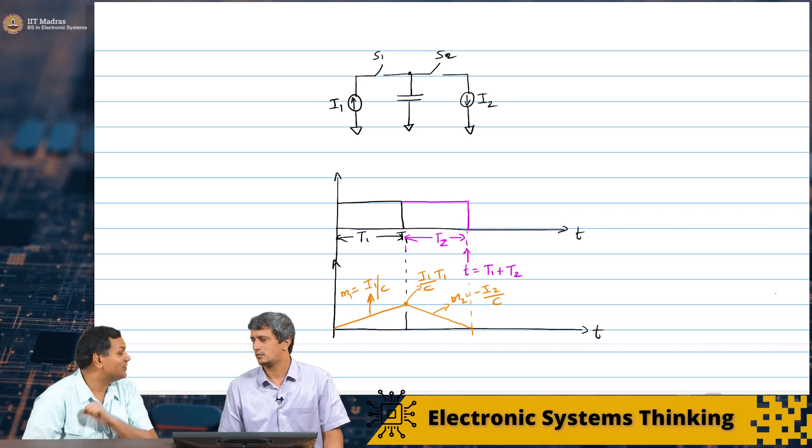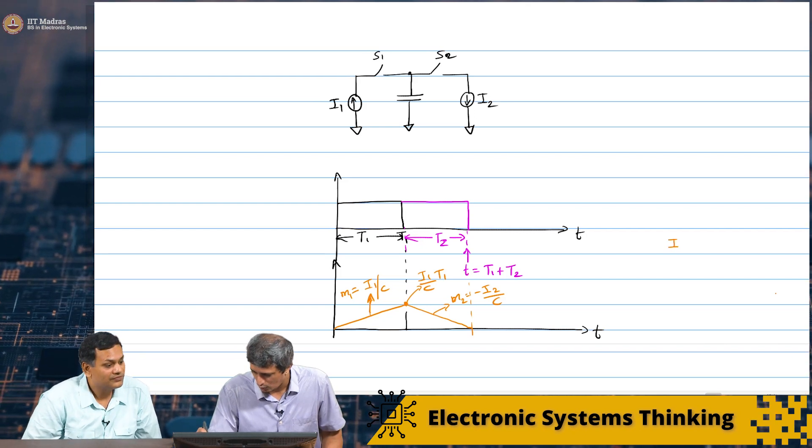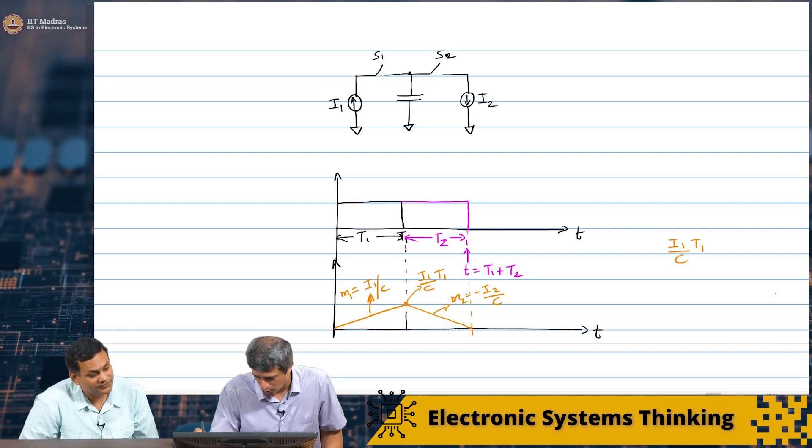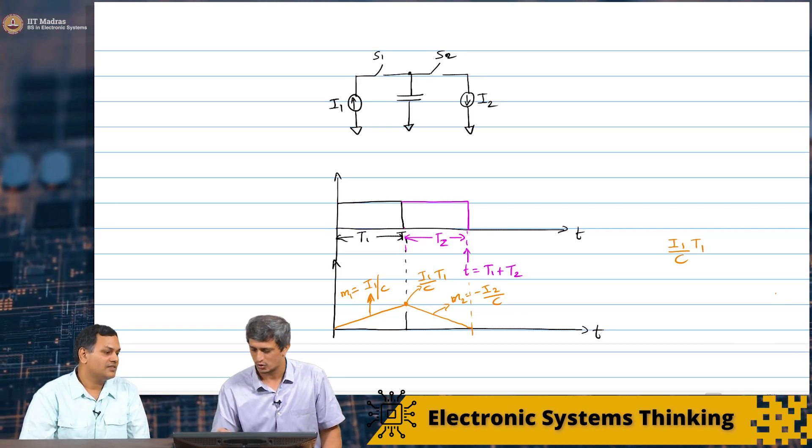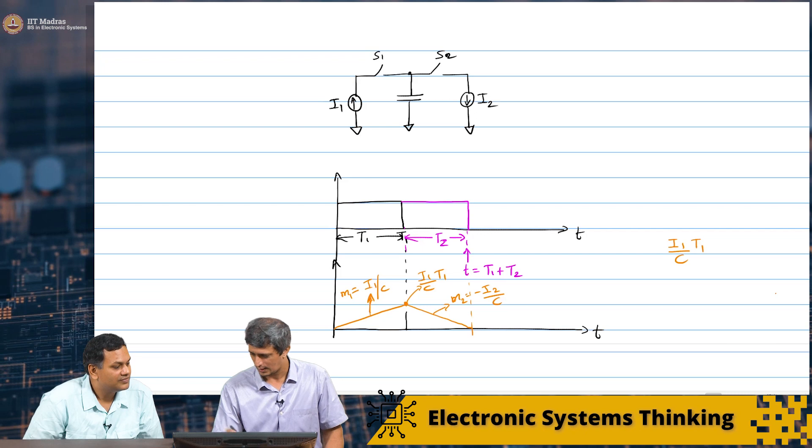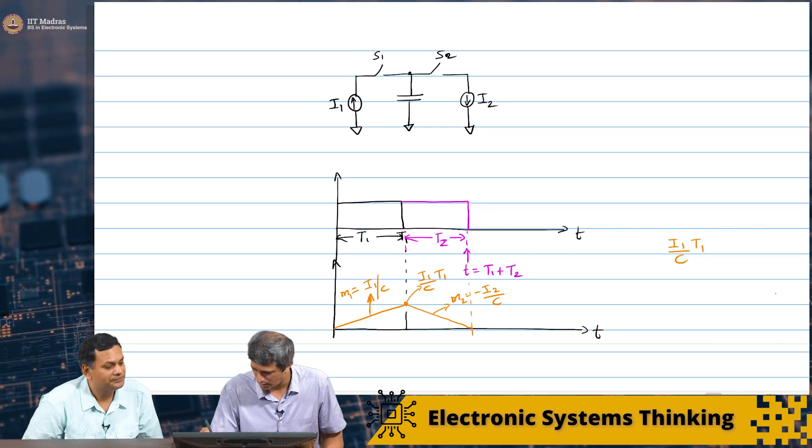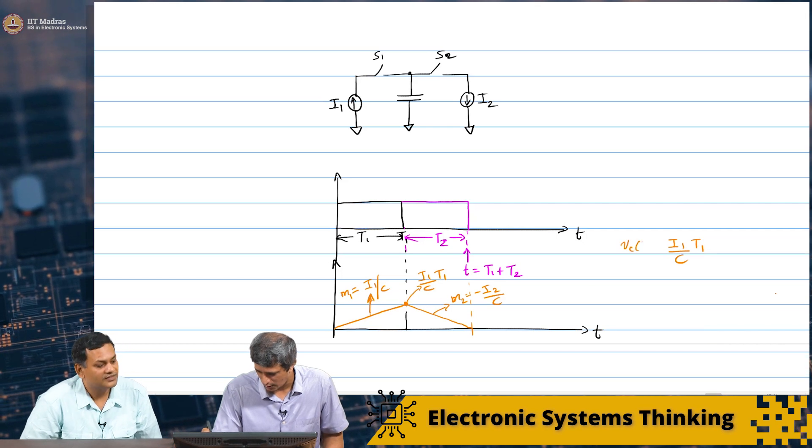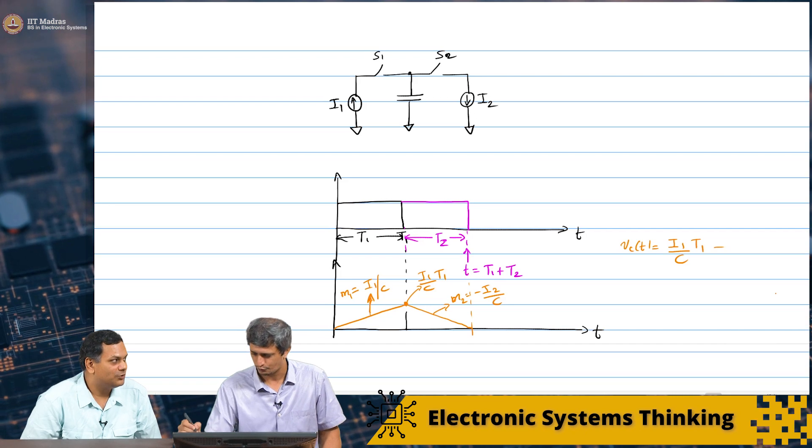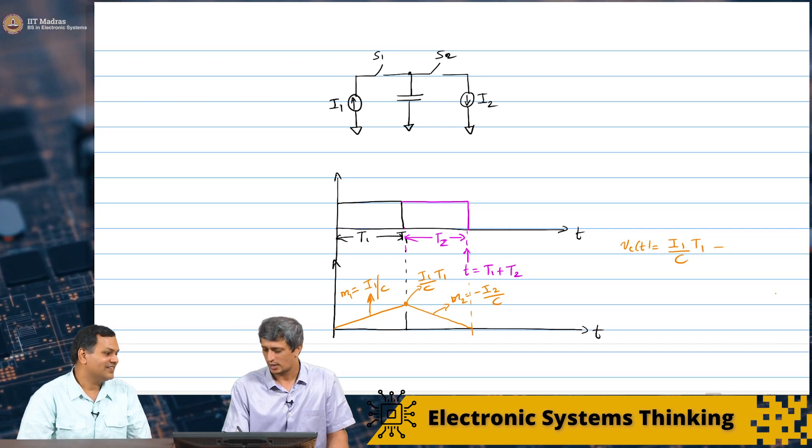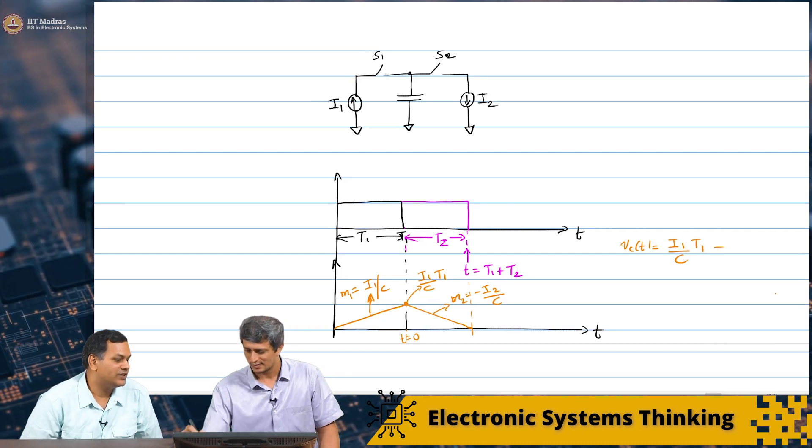So, now we have the initial condition for the second curve. From I1 by C into T1, we want that to discharge in time T2. So if you look at this value, this would be Vc of T equals this much. You want to write it in absolute time or relative time? Relative time from here. T equal to zero. We will do T equal to zero.